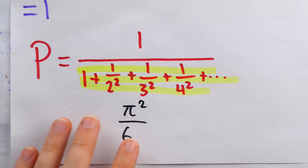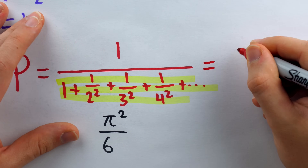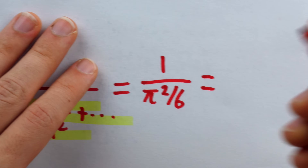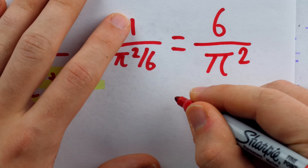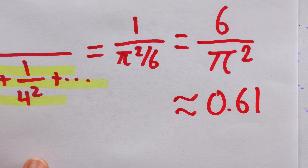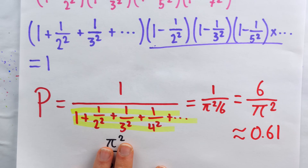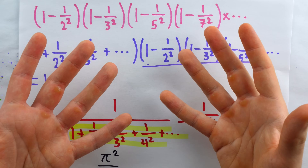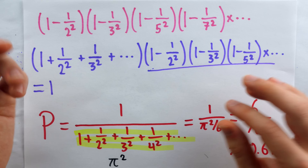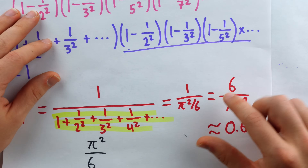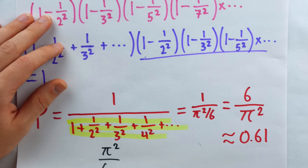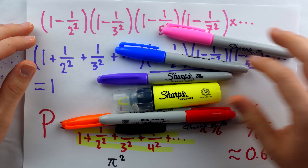Bringing it all together with Euler's gift: the probability we seek is 1 divided by π²/6, which of course is 6 over π². This is about a probability of 0.61, or 61%. So it is actually more likely than not that if we randomly select two positive integers, they will be relatively prime — they'll have no factors in common greater than 1. Who would have thought that asking whether two randomly chosen integers share a common factor would lead to something involving π? Let me know in the comments if you have any questions, and be sure to subscribe for more math videos.